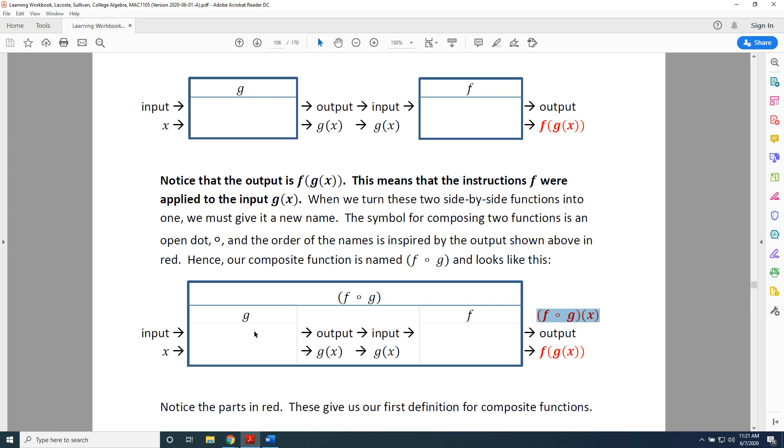But we know what's going on inside the large blue box. x goes into g, and what comes out is g of x. Then g of x goes into f, and what comes out is f of g of x.